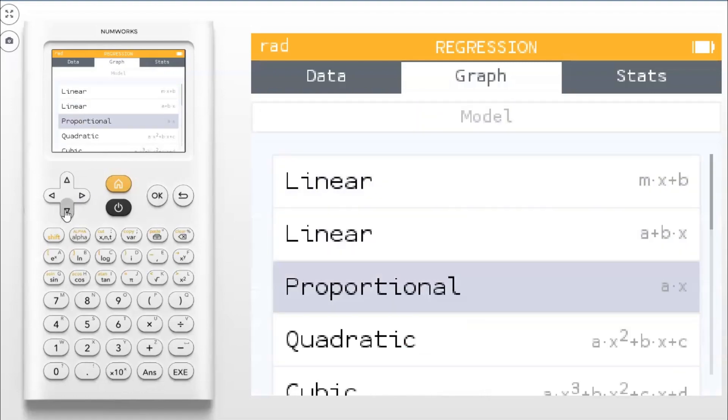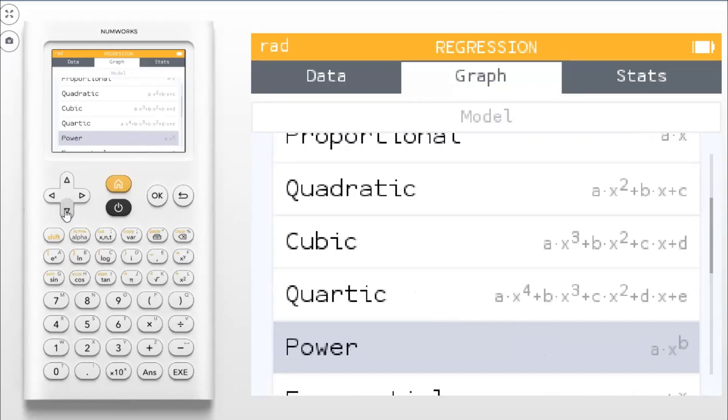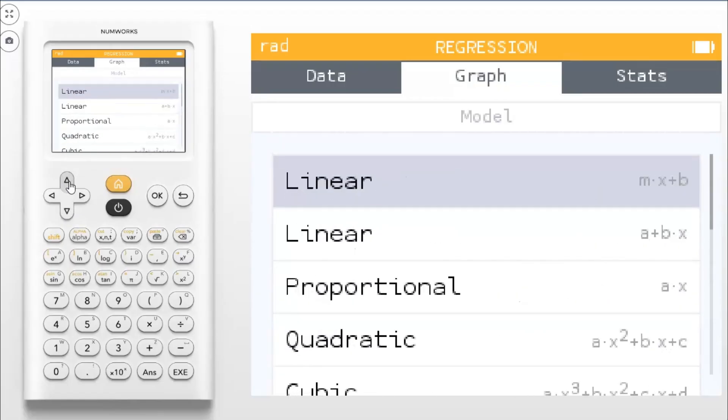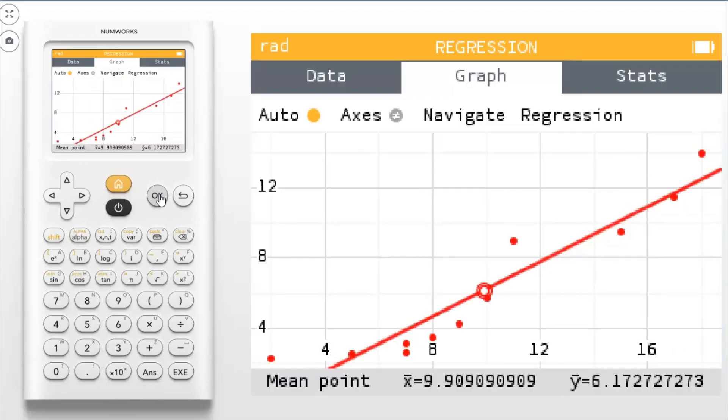And then you can also run regressions. Check this out. You can do linear regressions, quadratic regressions, cubic regressions, quartic regressions, all the different regressions. And the moment you click on one, let's do an a plus bx. That's what you're going to use in AP Statistics. Boom, it puts it in there for you.